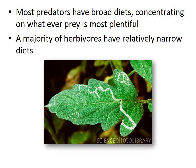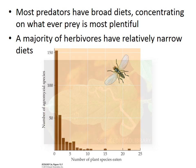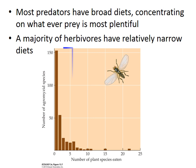For example, agromyzid flies are leaf miners, meaning their larvae live inside a leaf feeding on the leaf tissue, usually leaving visible evidence of their feeding tunnel. Most agromyzid flies are extremely species-specific, as shown here. The x-axis in this graph is the number of plant species, while the y-axis is the number of fly species that eat that number of plant species. Just over 150 species feed on only one species of plant and will not lay their eggs on any other. In fact, about 80% of the 300 species included fed on five or fewer plant species.